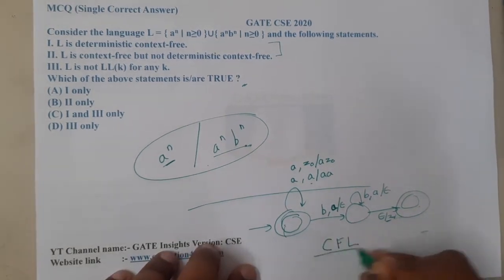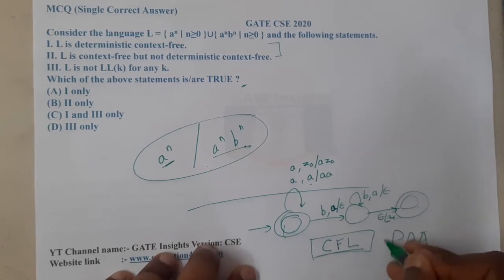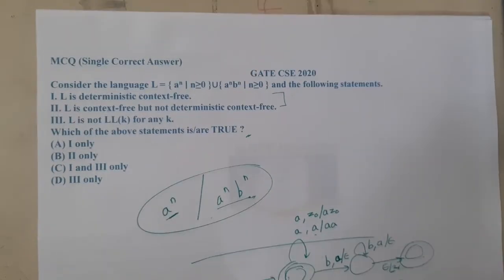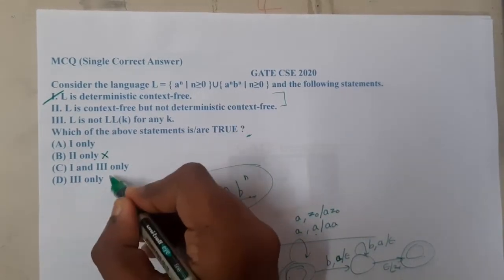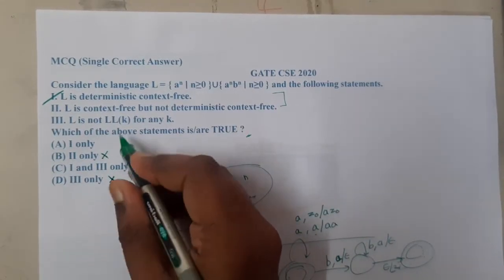It is nothing but a context-free language, and pushdown automata is possible - that is, deterministic pushdown automata is possible. So option 1 will be the correct answer. This is wrong and this is wrong. Now we need to check about this LL(k).